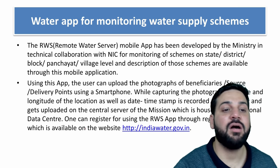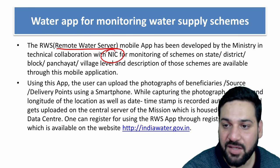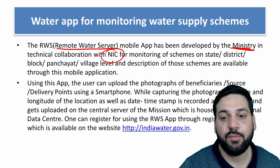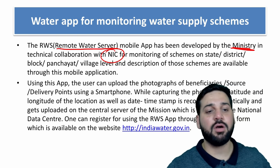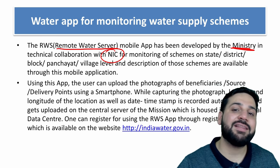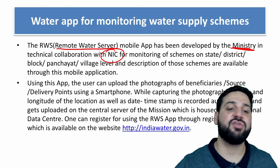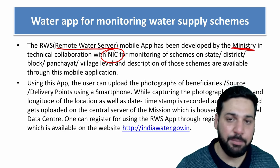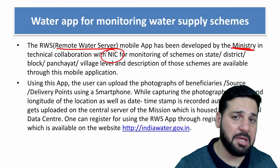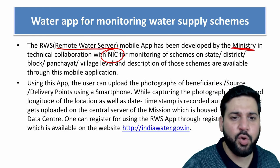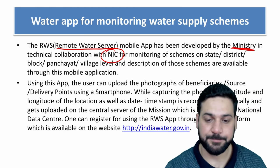The RWS — Remote Water Server — mobile app has been developed by the Ministry in technical collaboration with NIC for monitoring schemes related to water management at the state, district, block, panchayat, and village level. Using this app, you can upload photographs of beneficiary sources or delivery points, the app fetches your location, and uploads it to the server. The website is indiawater.gov.in.